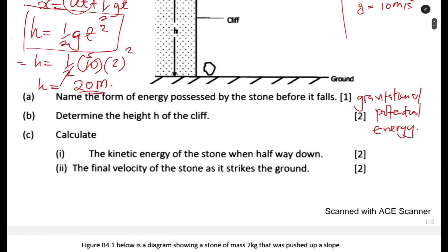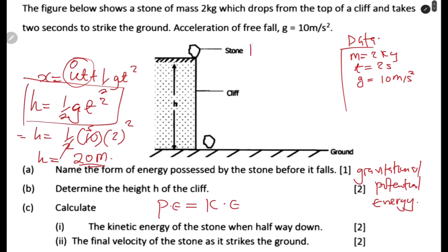Calculate the kinetic energy of the stone when it is halfway down. This is where you need to know the concept of energy conservation: energy can neither be created nor destroyed, but only converted from one form to another. On top of the cliff, all the energy is in the form of potential energy, and kinetic energy equals zero.